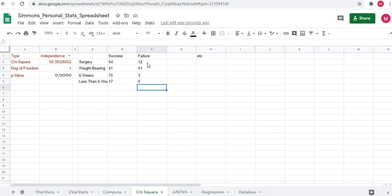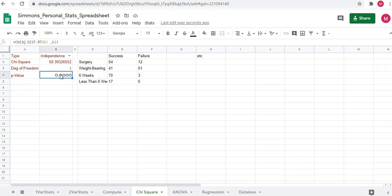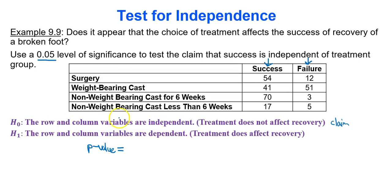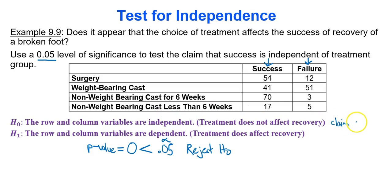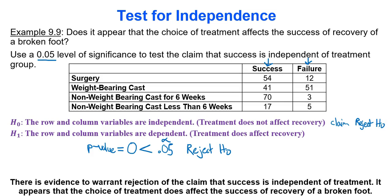The test statistic is 58.39. Degrees of freedom is 3, and the p-value is 0. Comparing the p-value to alpha, it's definitely less than 0.05, so we reject the null hypothesis — we are under the limbo bar. We reject our claim. There is evidence to warrant rejection of the claim that success is independent of treatment. Basically, the choice of treatment does affect the success of recovery of a broken foot — a medical application of statistics.